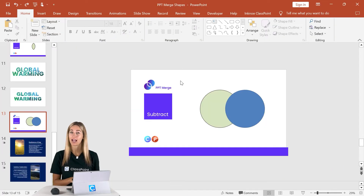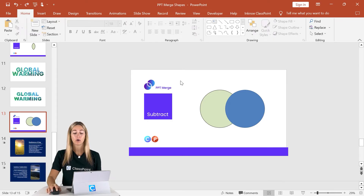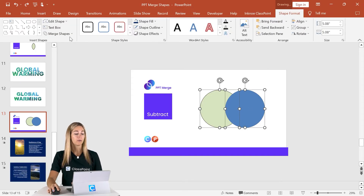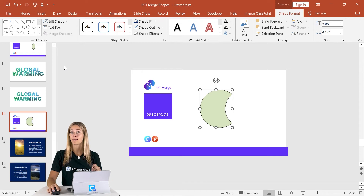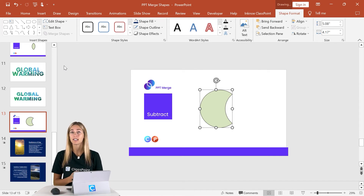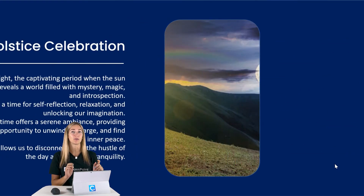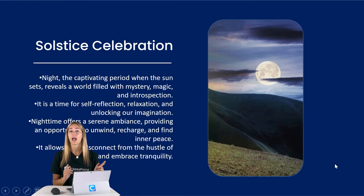Lastly, we have Subtract — pretty self-explanatory. It takes one shape and subtracts it from the next. Whichever shape you select second will be subtracted from that first shape. A really fun way to use this in your presentations is with images and shapes to get a little peek into something new, especially when combined with the Morph transition.